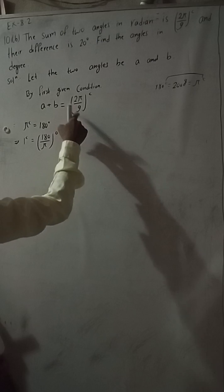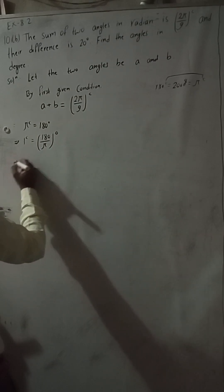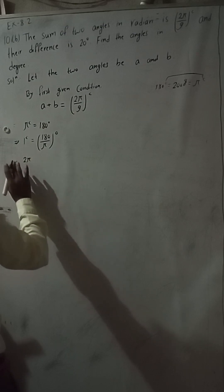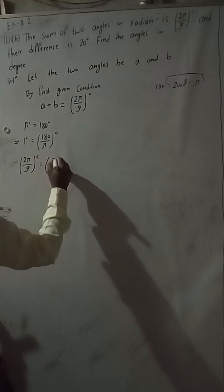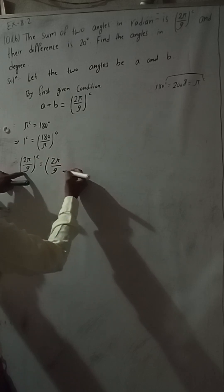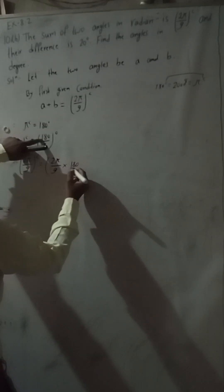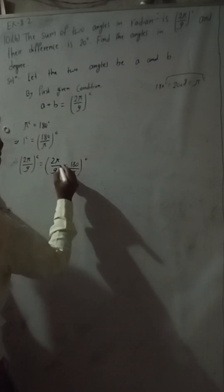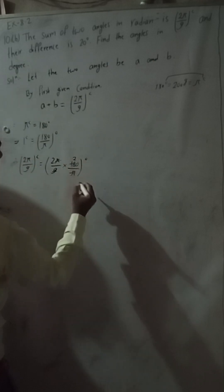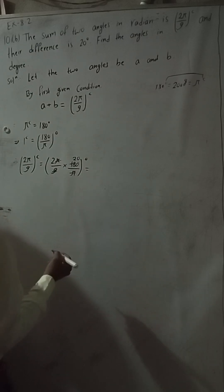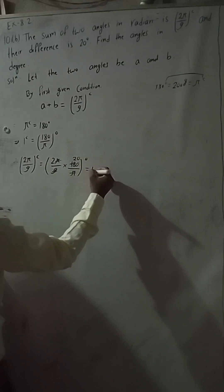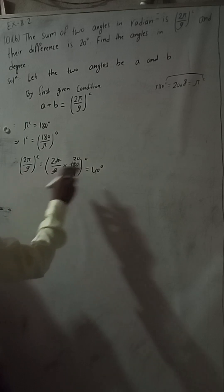So 2π/9 radians equals 2π/9 multiplied by 180/π degrees. Pi cancels, 9 twos are 18, and 20 twos are 40 degrees. So 2π/9 is equal to 40 degrees.